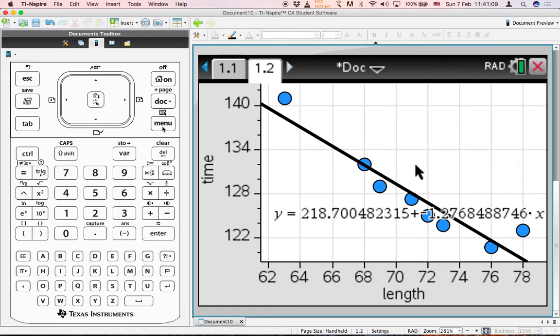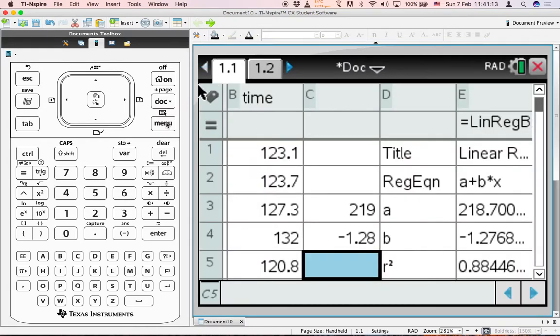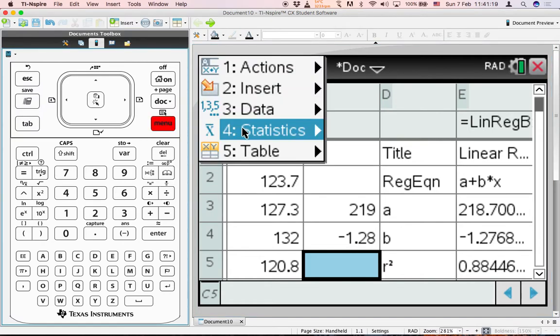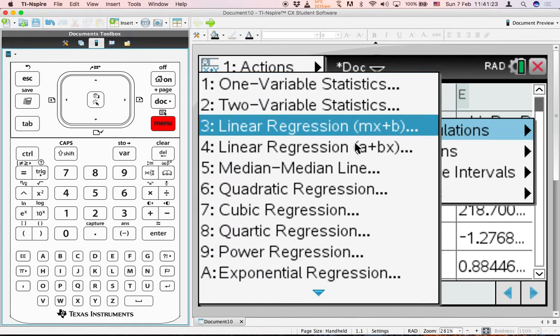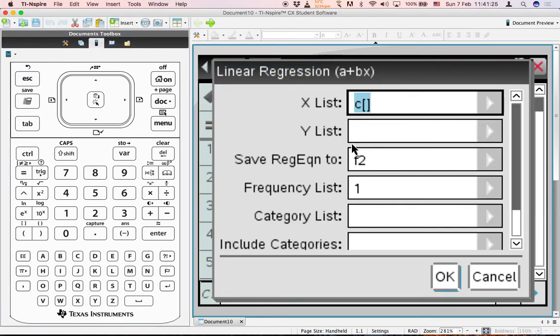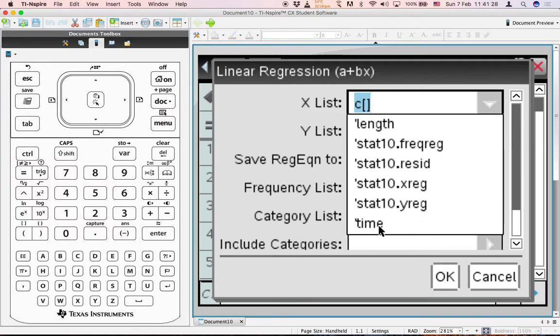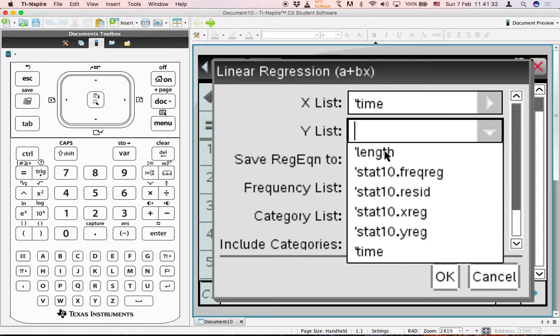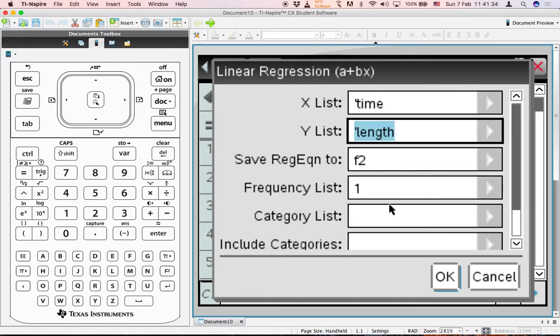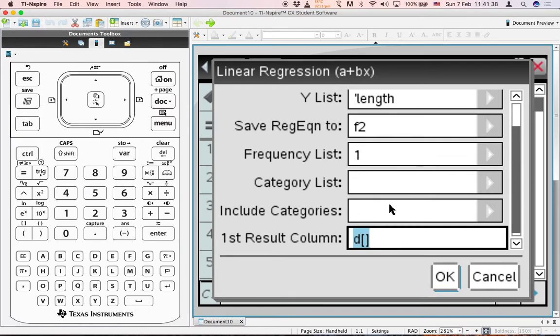And now we go to the data and do part B2. So we will use the statistic calculations again. But this time X would be assigned to time and Y would be assigned to length.